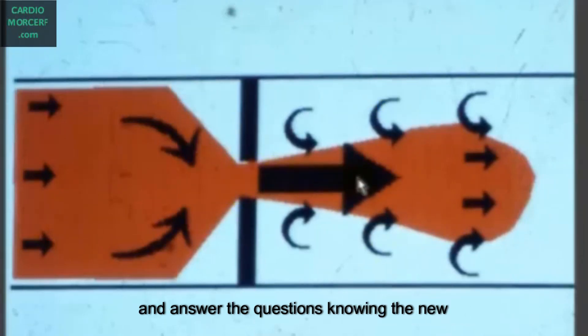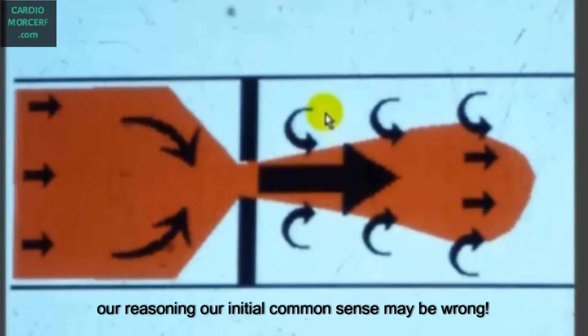Now, check the film again, and answer the questions knowing the new variable. You will see that once new variables enter our reasoning, our common sense may be wrong.